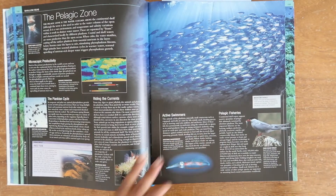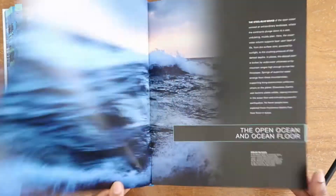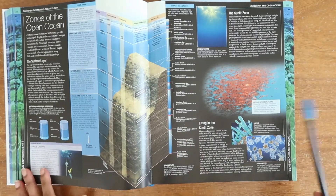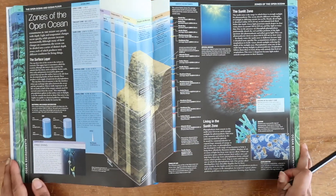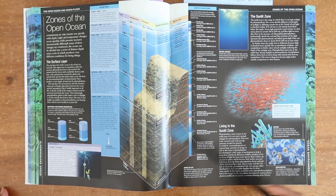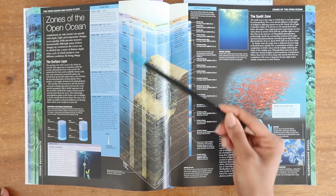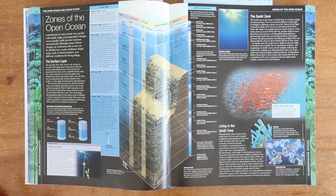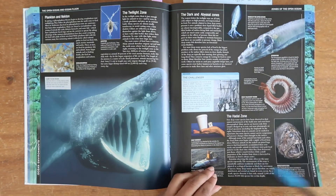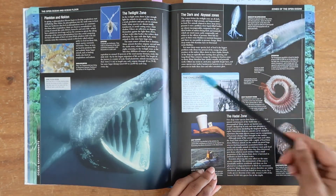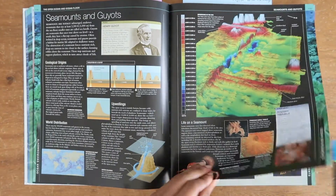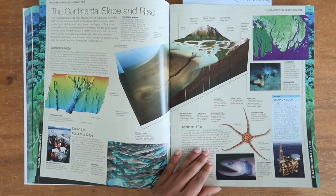Mangrove forests, shallow seas — they're going to talk about coral areas and the Sargasso. Whether you're doing shallow areas or deep oceans, there's a section in this book for you. In the open ocean section, last year when we did our ocean unit we spent time looking at the different zones like the sunlit zone and the abyssal zone, and then the creatures of those zones. There's a little bit on each, including submarines, and you can expand on all of this with other books as well.